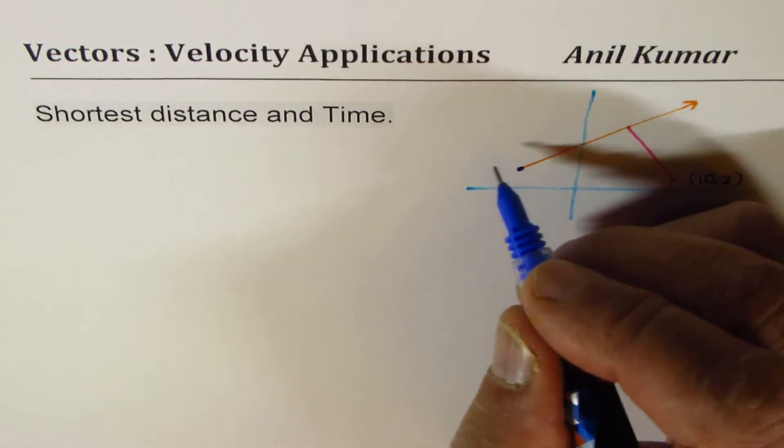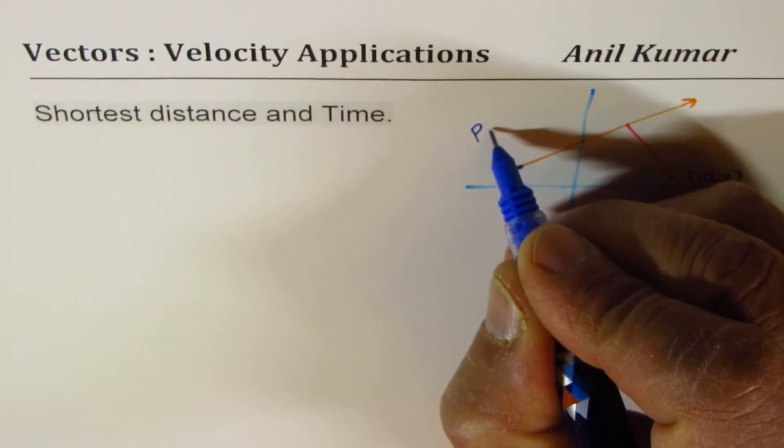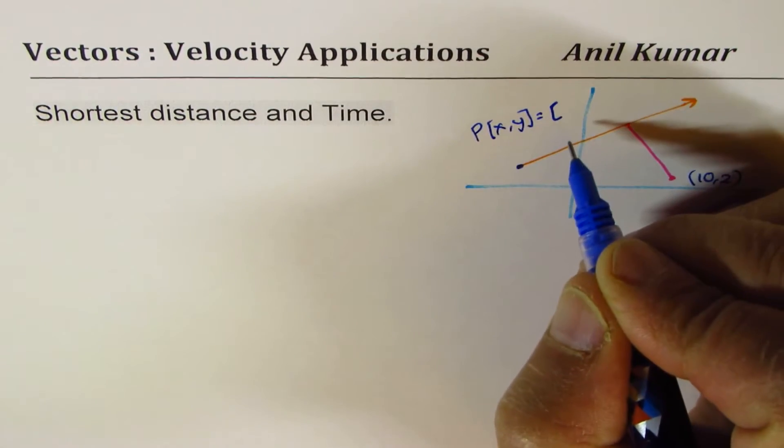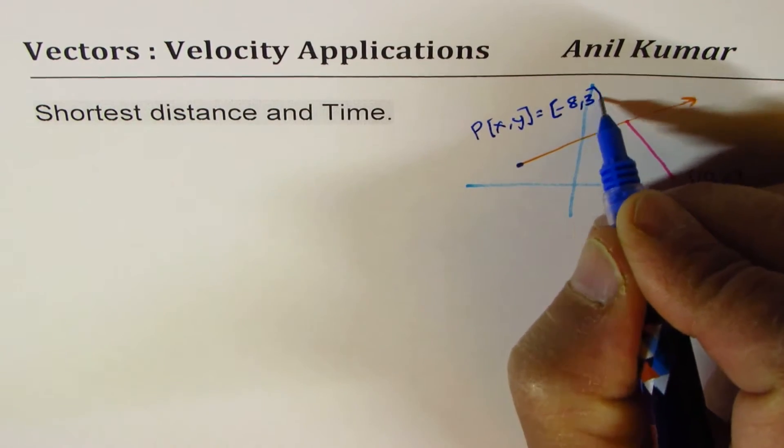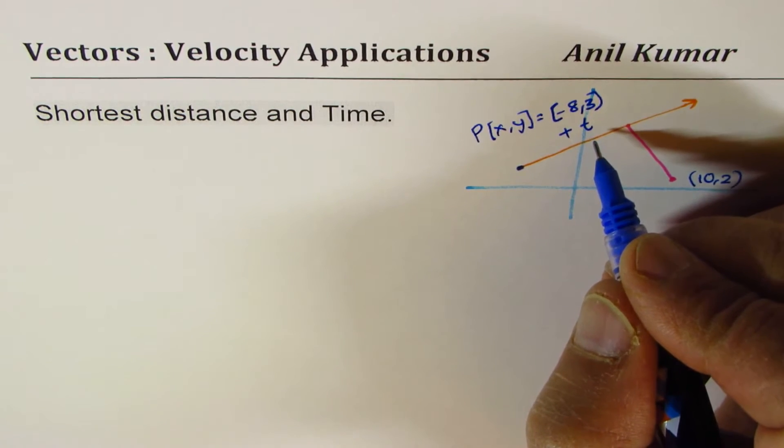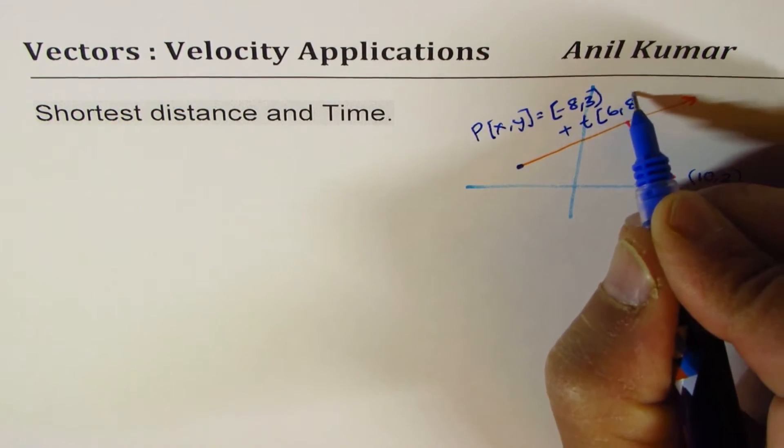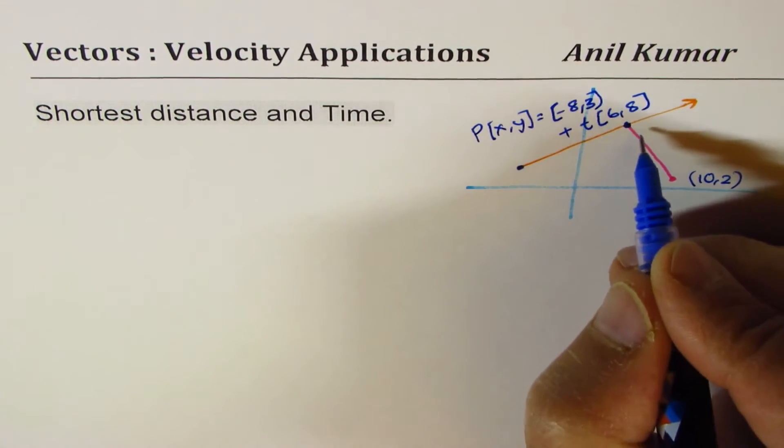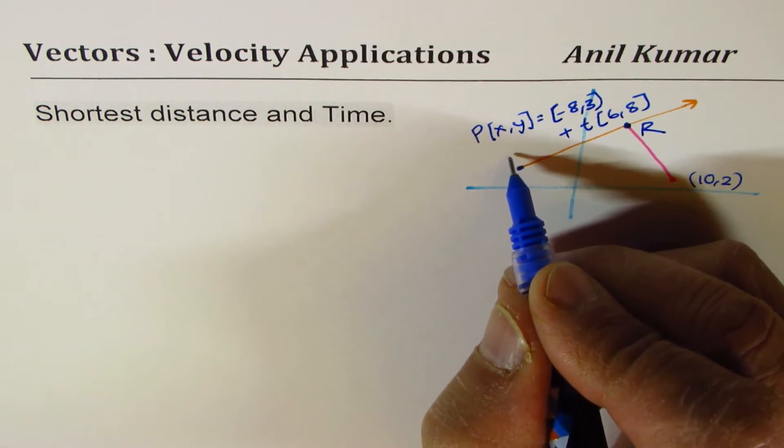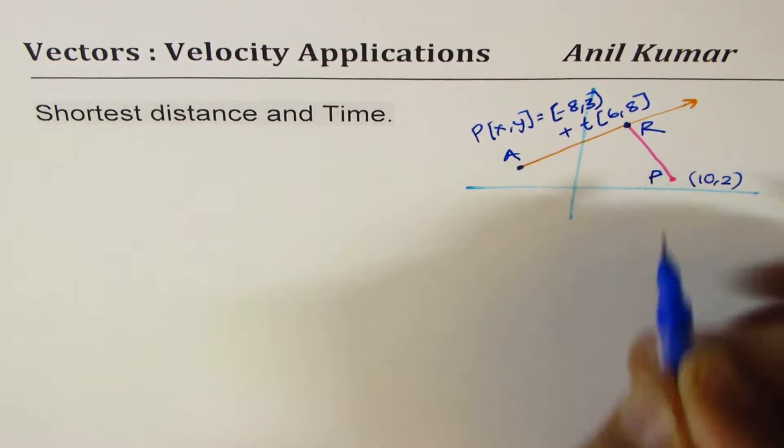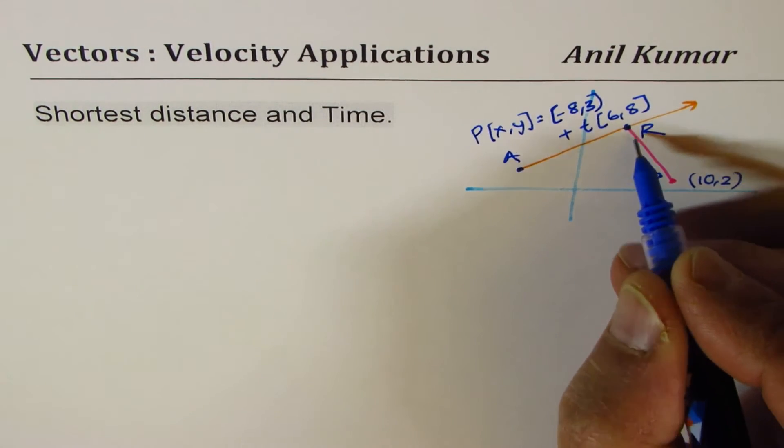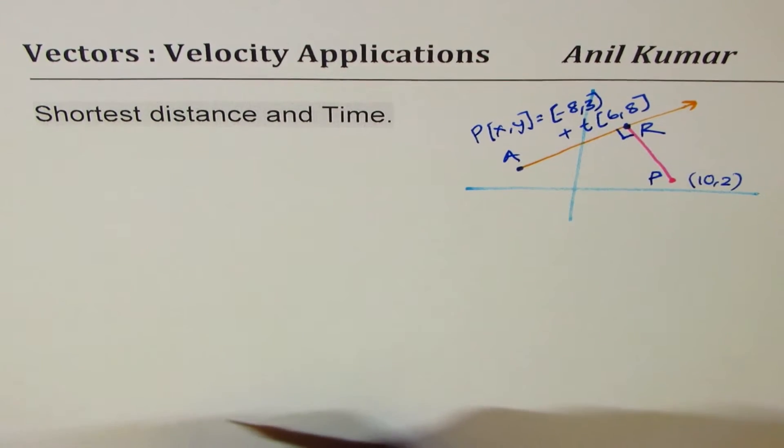Let me sketch again what we did there. A copy of it. So let's say that's the direction. And what we are really interested in finding is the closest distance. That means perpendicular distance. We are given this point as (10, 2) at this point. Let's call this vector as such. Let me write down the vector equation here. And we are given position as, let's say, (X, Y) equals to (-8, 3), which is this point, plus T times the direction, which is (6, 8).